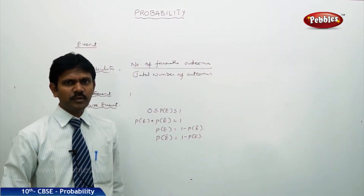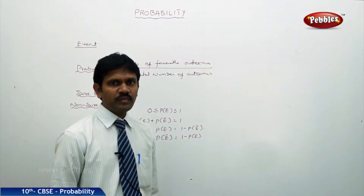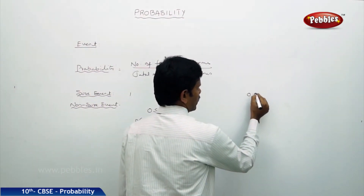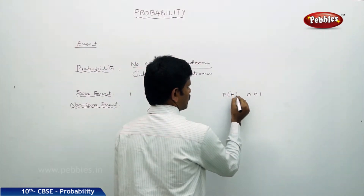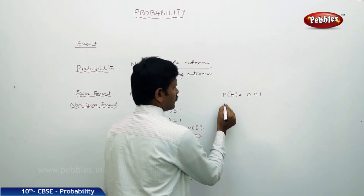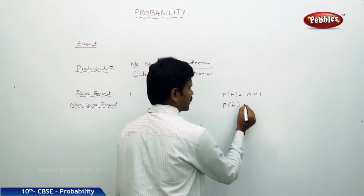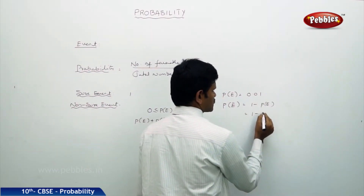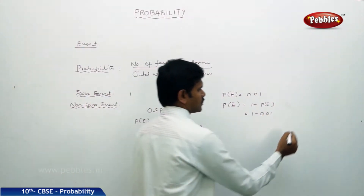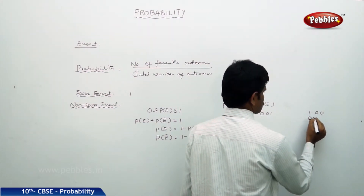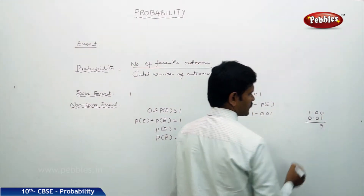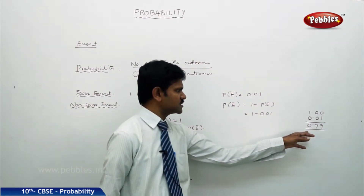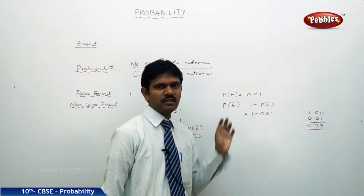Next example: the probability of students passing an examination is P(E) = 0.01. The probability of not passing, P(Ē), is calculated using the formula 1 − P(E), that is 1 − 0.01 = 0.99. So 0.99 is the probability of students not passing the examination.